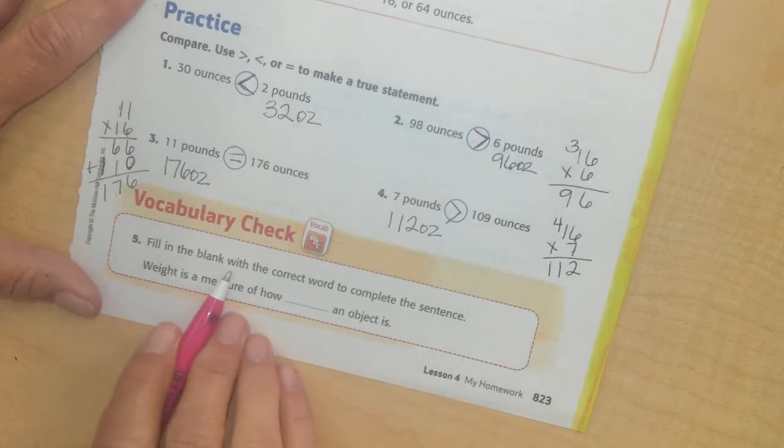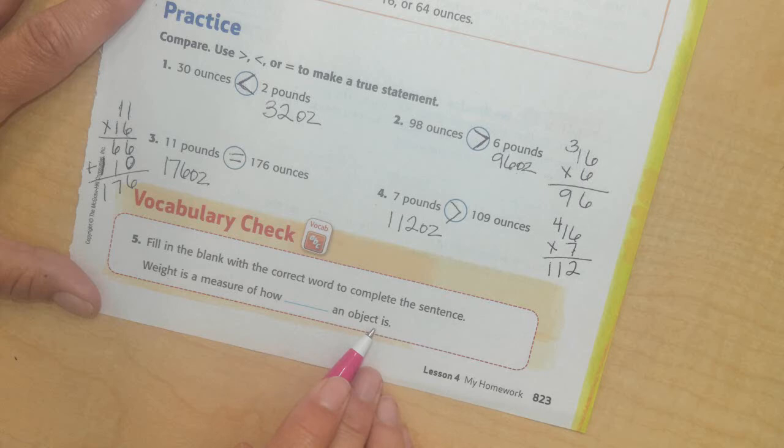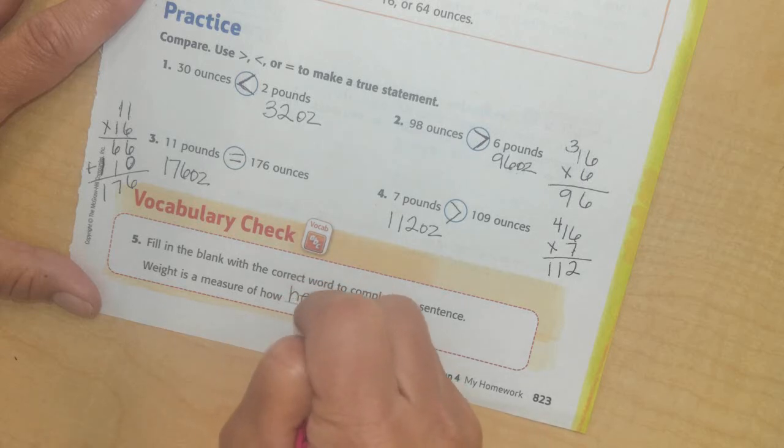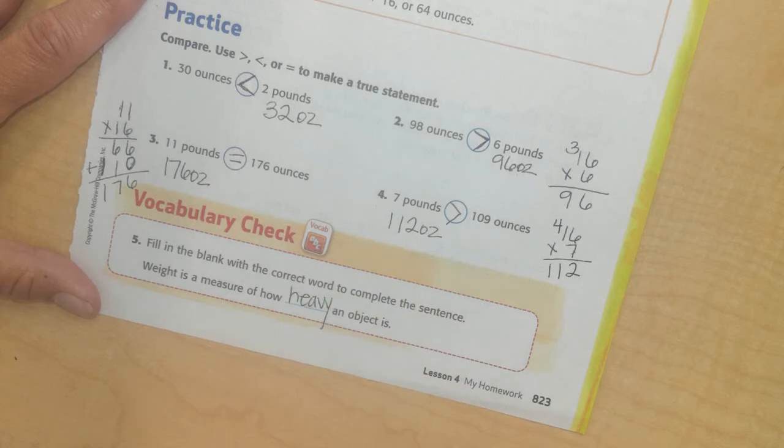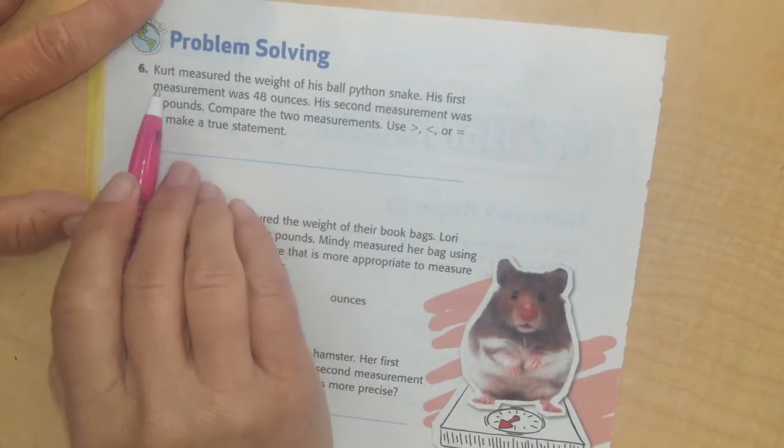Alright, fill in the blank with the correct word to complete the sentence. Weight is a measure of how blank an object is. So we'll write weight is how heavy an object is. How much does it weigh? I'm going to go to the back. Pause if you need to.